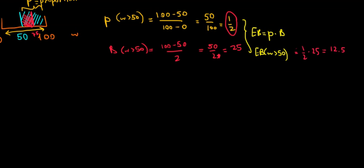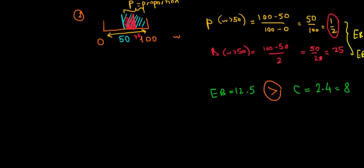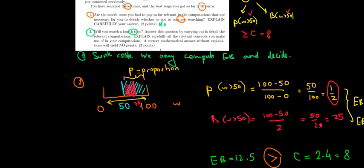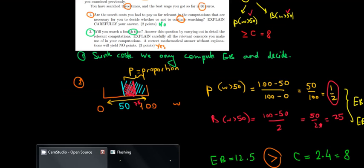So that's the expected benefit. And what did we say? In order to decide, we're going to compare the expected benefit versus the cost. So we have the expected benefit of 12.5 euros. The cost we said would be 2 euros times the fourth round, which is 2 times 4, 8 euros. We can see that 12.5 is higher. So in expectation, we have a good shot of looking for a higher wage, and we will do it. So yes, we are going to go for the fourth search. And in the answer key, will you search? The answer should be yes. And that's it. We are done. Thank you.